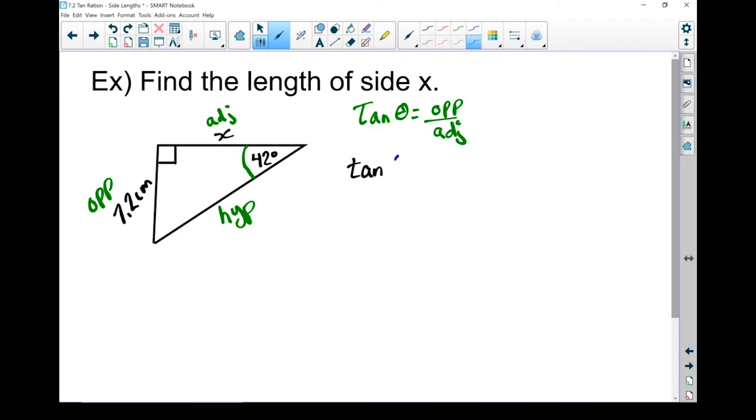Tan of, and instead of theta, I'm going to put in 42 degrees equals. Now this time I know my opposite side. So I'm going to put in 7.2 centimeters divided by, and this time I don't know my adjacent side. So that I'm going to put my x in there. Alright, let's figure out what the tan of 42 is. I'm bringing up my calculator,